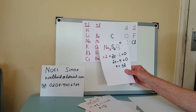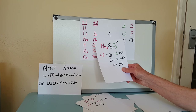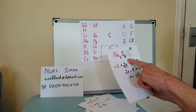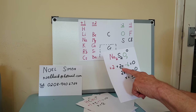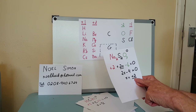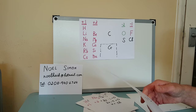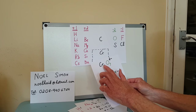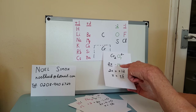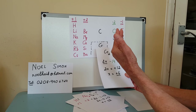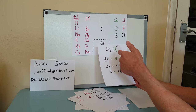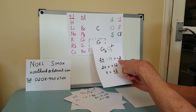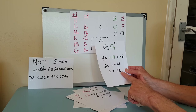Next, Na₂S₂O₃: two sodiums give +2; three oxygens give −6; two sulphurs are 2x. Solving the equation gives x = +2 for sulphur. Now an ion with chromium, which is a transition metal and can have many different oxidation states. Seven oxygens give −14, and the whole ion has a charge of −2. Working it out: x = +6 for chromium.